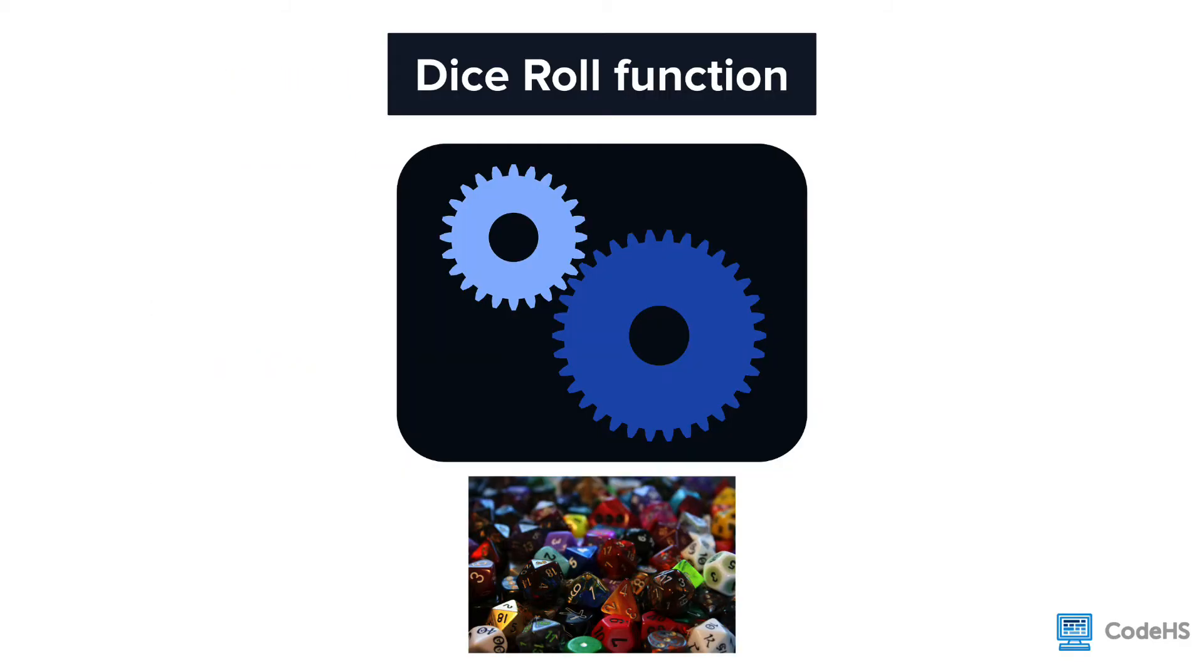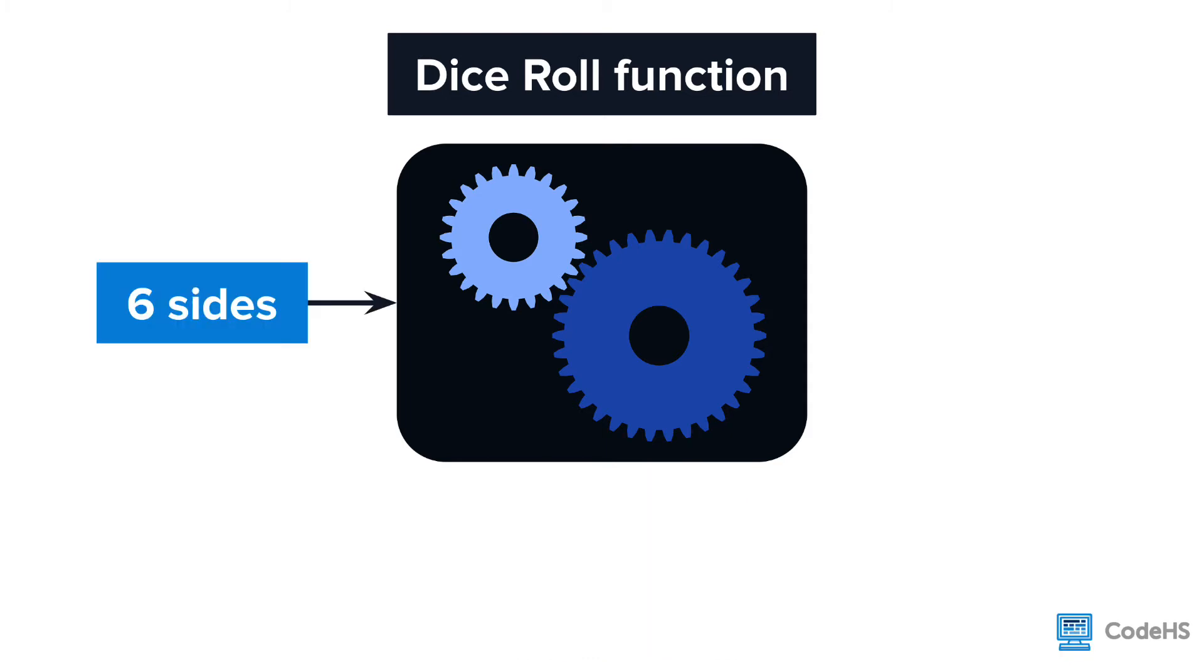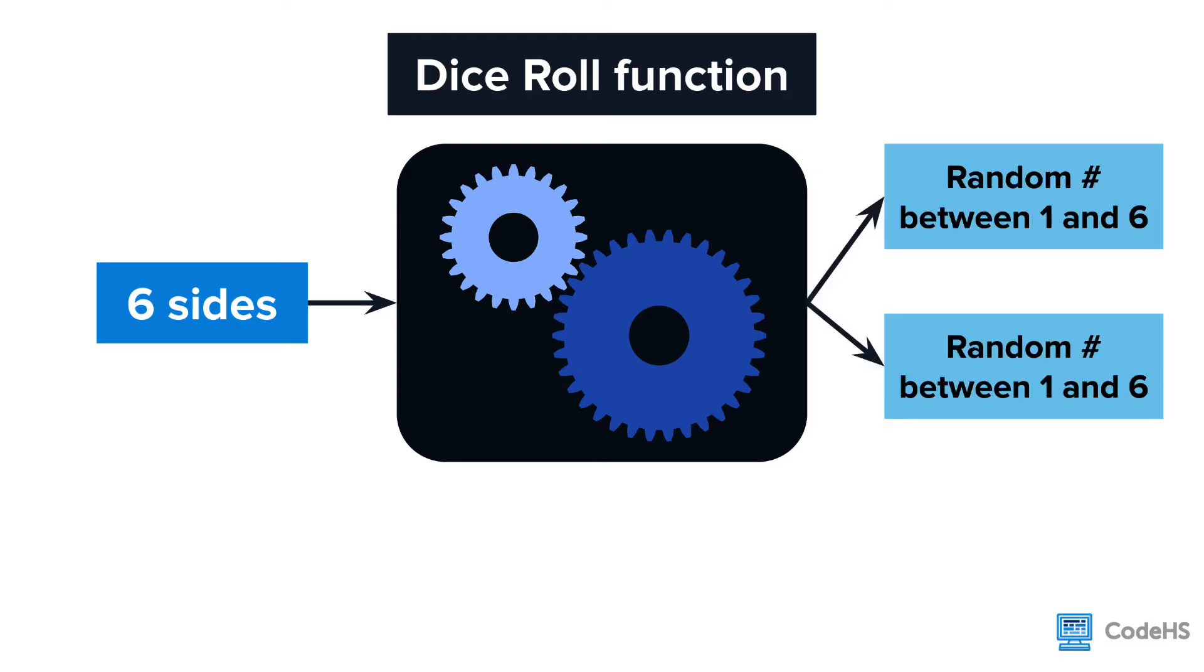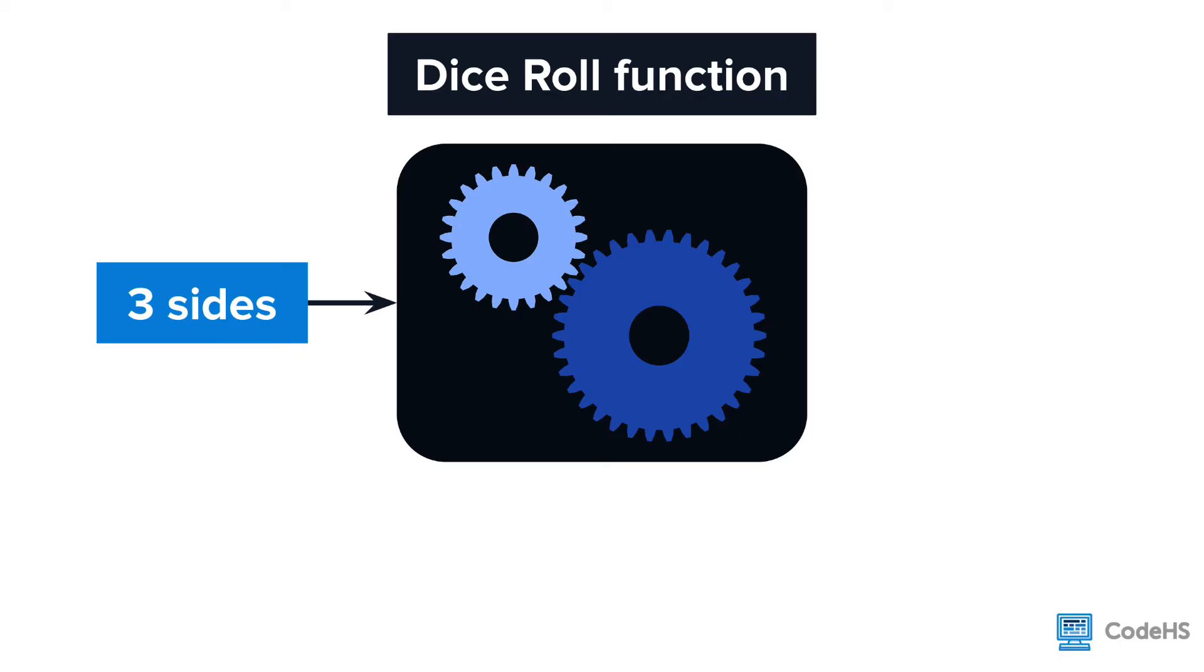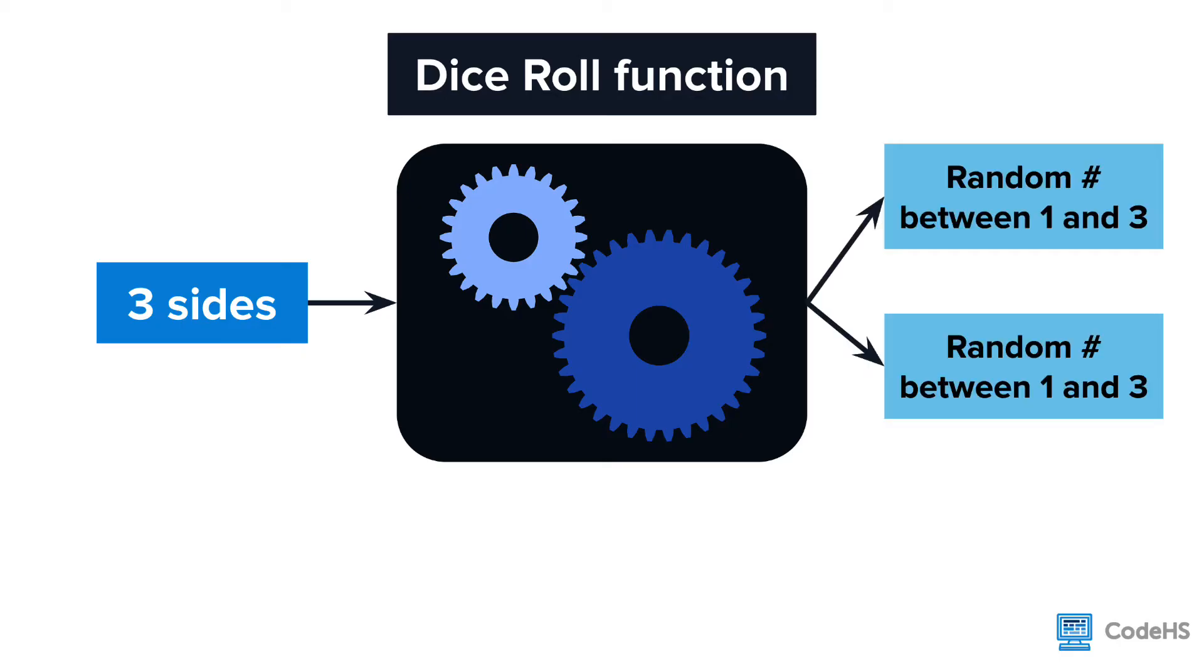This might lead to another question. Wouldn't it be nice if we could tell the rollDice function how many sides the dice should have? So that when we want to roll a six-sided dice, it gives us two random numbers between one and six. Or when we want to roll a three-sided dice, it gives us two random numbers between one and three.